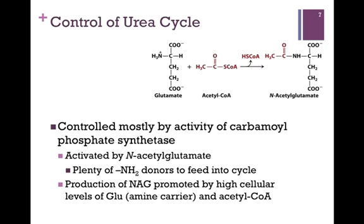How do we control the urea cycle? It's controlled mostly by the activity of carbamoyl phosphate synthetase. Remember, we started with glutamate as our amine donor. Glutamate can be acetylated to form N-acetyl glutamate. If the concentration of glutamate and acetyl-CoA within the cell is high, then we form a large concentration of N-acetyl glutamate. This signals that we have a high concentration of amine donors to feed into the cycle, so N-acetyl glutamate stimulates the activity of carbamoyl phosphate synthetase, generating plenty of product to feed into the urea cycle.